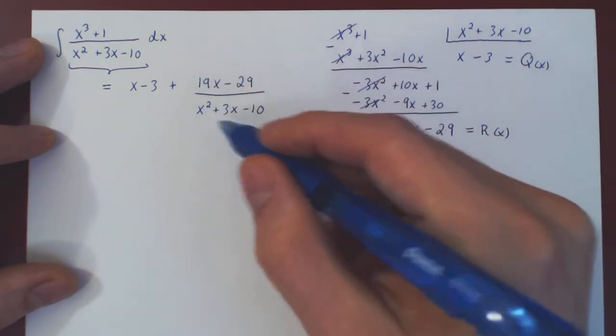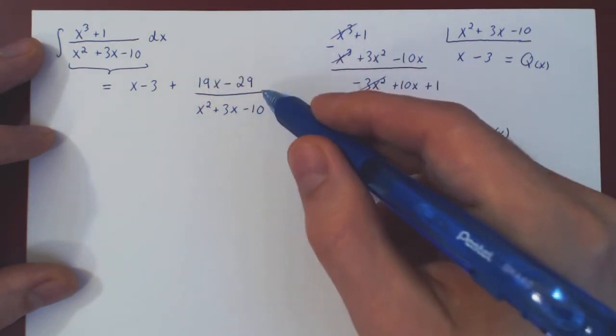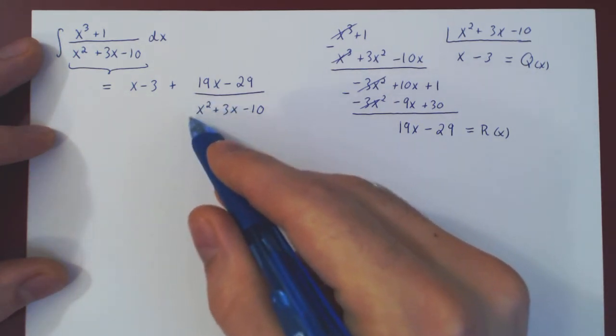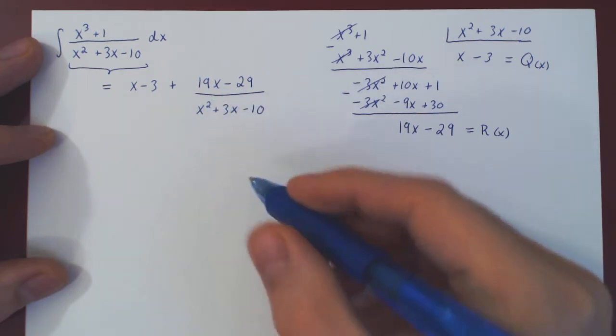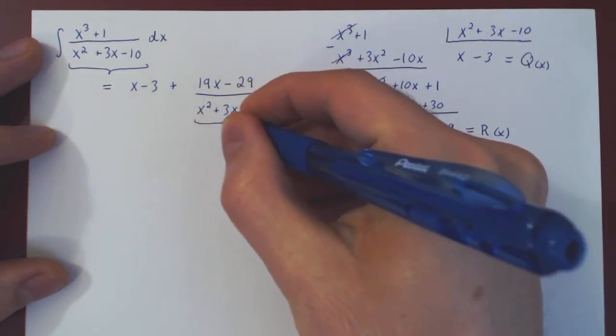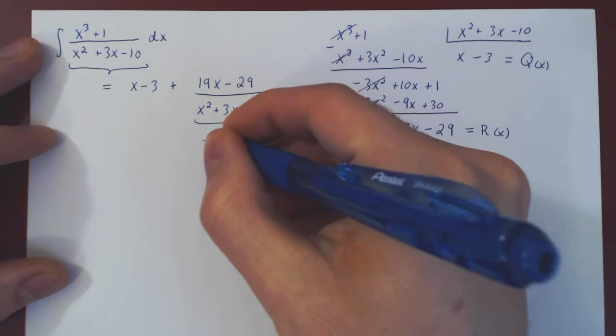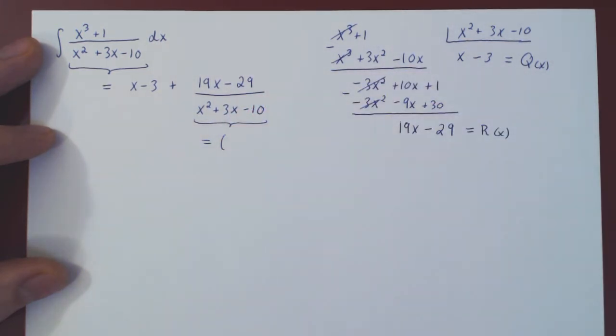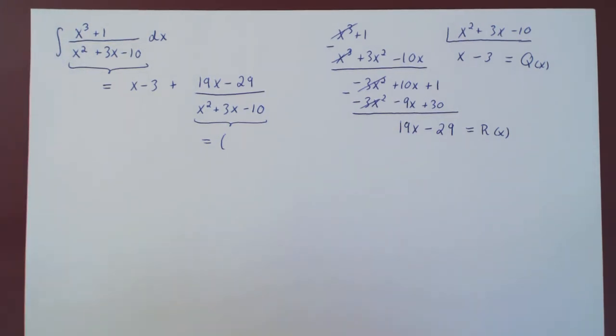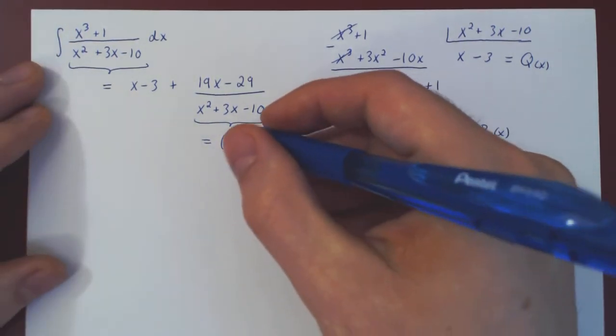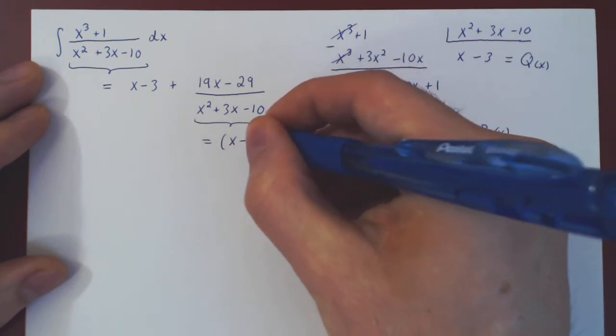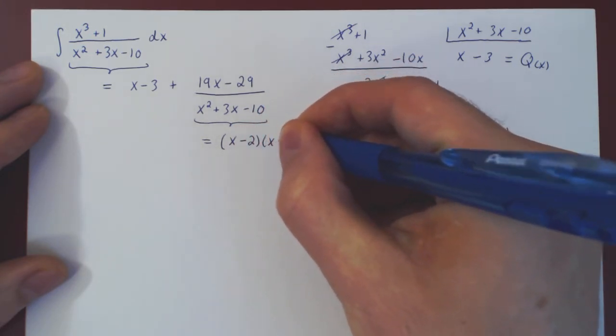And we know that to integrate such a rational function, we have to break it down into partial fractions. So the first step will be to factor our denominator, if possible. It should be fairly easy to see by inspection that x squared plus 3x minus 10 factors as x minus 2 times x plus 5.